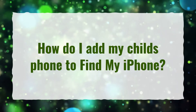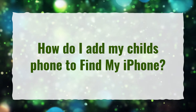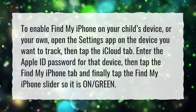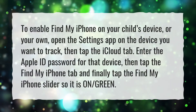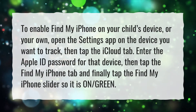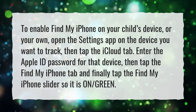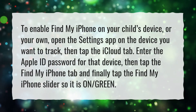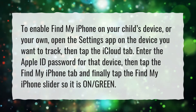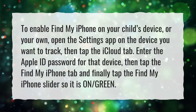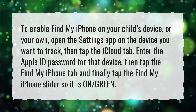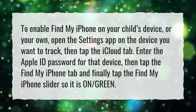How do I add my child's phone to Find My iPhone? To enable Find My iPhone on your child's device, or your own, open the Settings app on the device you want to track. Then tap the iCloud tab. Enter the Apple ID password for that device. Then tap the Find My iPhone tab, and finally tap the Find My iPhone slider so it is on — green.